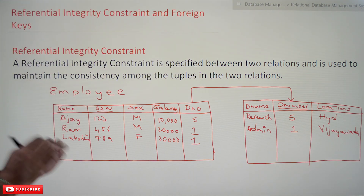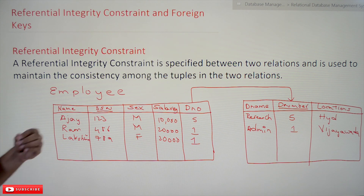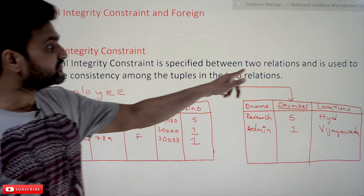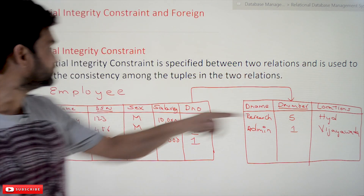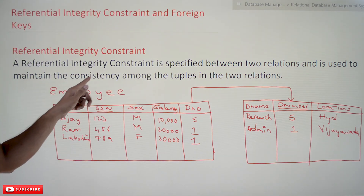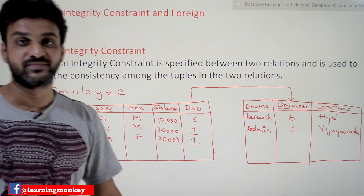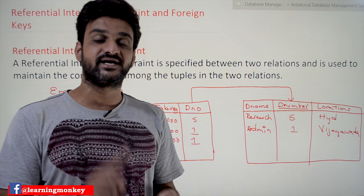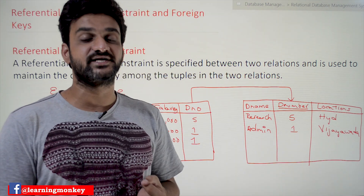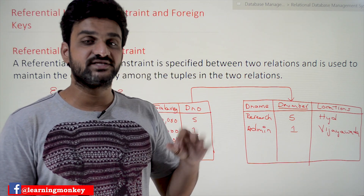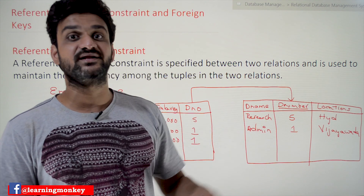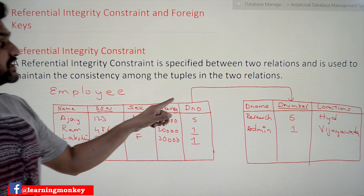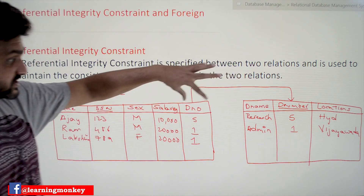A referential integrity constraint is specified between two relations and is used to maintain consistency among the tuples in those two relations. Domain constraint, key constraint, and null value constraint are applied on a single relation or a single table, but the referential integrity constraint is always applied between two tables.